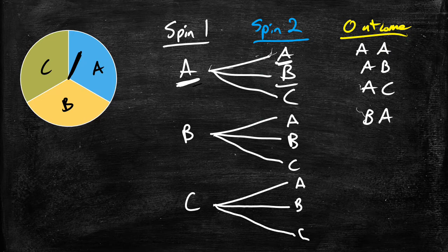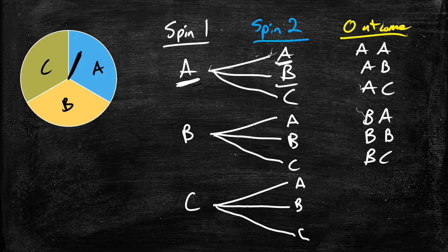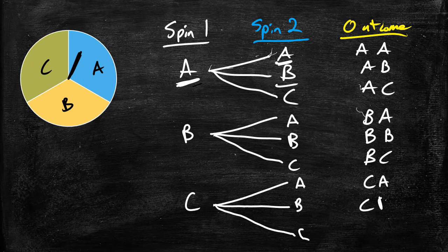Now here we would get a B, A, a B, B, a B, C. And in this last set here we would get a C, A, a C, B, and a C, C.